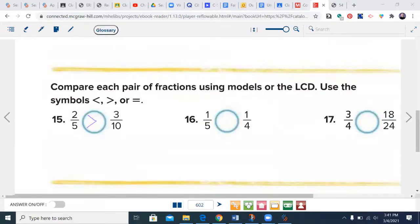Go ahead and do numbers 16 and 17. Pause the video. Welcome back, let's see what you got. These can go over to 20, so 4 twentieths and 5 twentieths—that's a bit bigger. Four goes into 24, so I'll keep this one alone. 4 times 6 is 24, 3 times 6 is 18. We have an equal, so there we go.